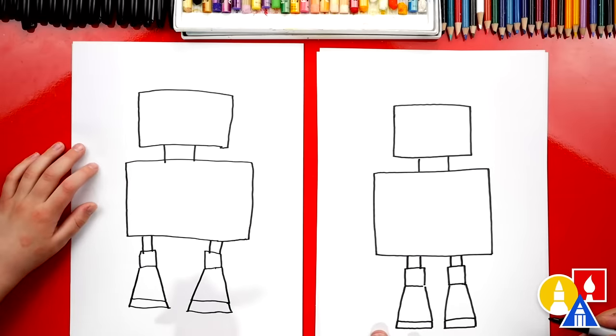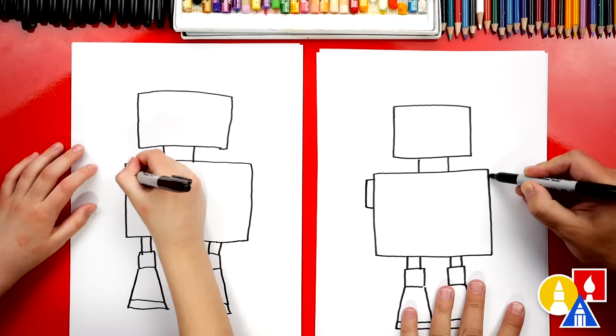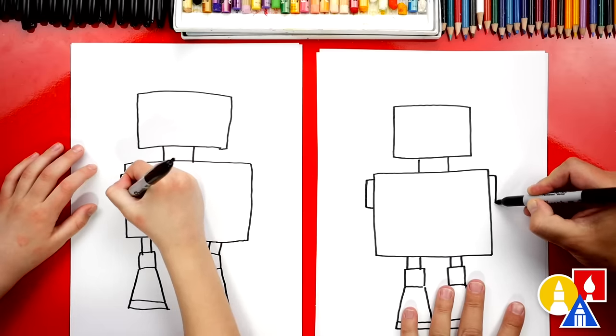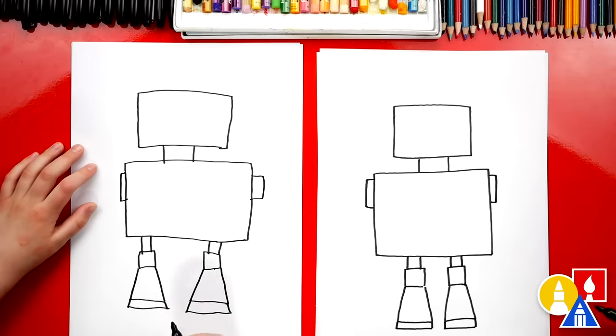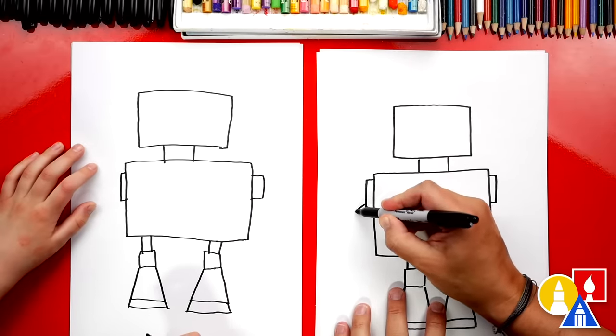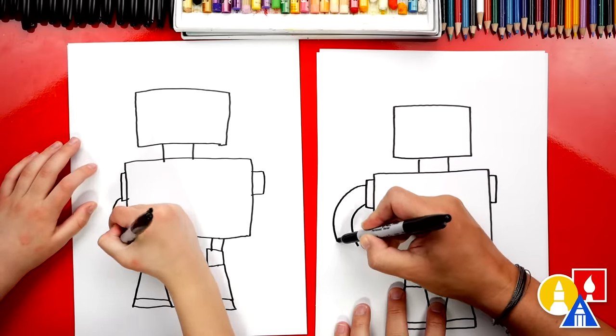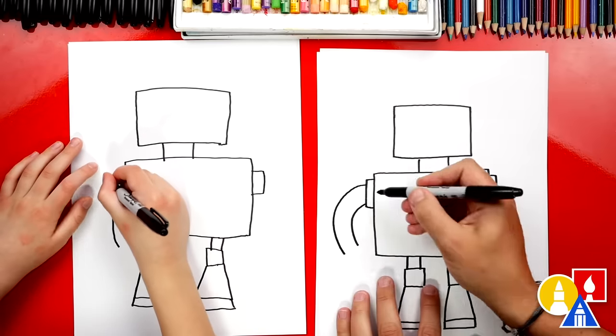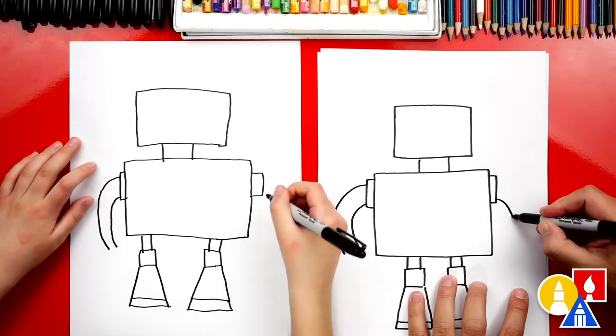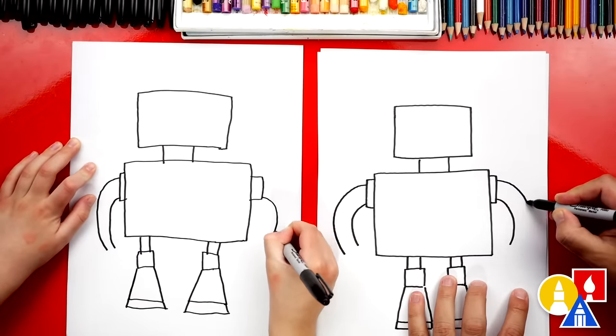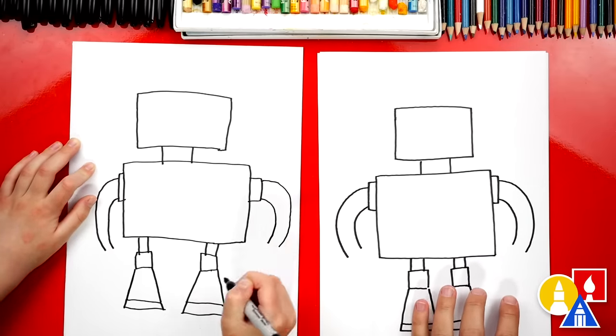What should we draw next? The arms. Let's draw more long rectangle shapes, maybe one on each side. This could be the shoulders to our robot. The other cool thing about drawing a robot, you don't have to draw it exactly like how we're drawing. You could draw it differently. You could add more details and more shapes. I'm going to draw two curves for the arm bending down. We could do that same shape over here for the other arm.